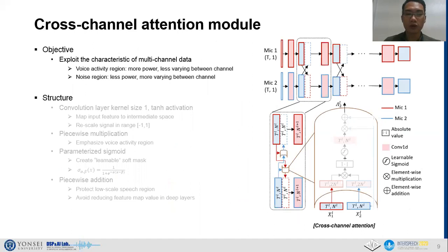In this slide, we will explain about the cross-channel attention module in detail. First of all, the objective of this module, as already stated at the previous part, is to effectively exploit the characteristic of multi-channel data in which the voice activity region shows higher energy and is more consistent across different channels, and the noise region shows less power on voice activity part and more varying between channels.